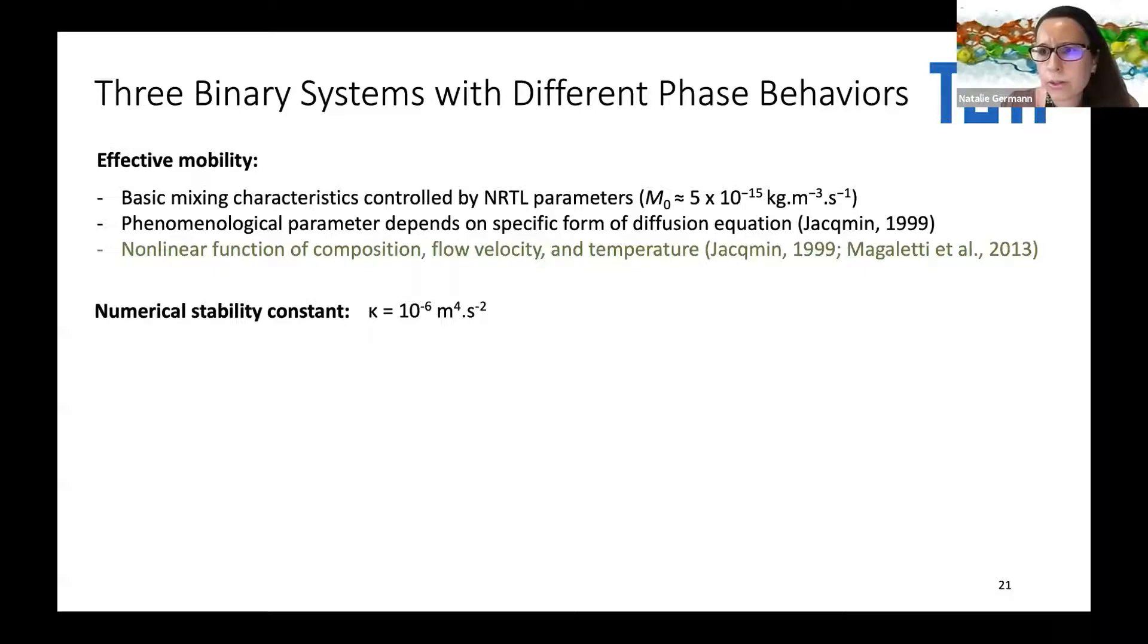It's basically a phenomenological parameter depending on the specific form of the diffusion equation. It is a non-linear function of composition, velocity, and temperature, and needs to be adjusted to experiments. This is a very important point, especially if you want to do industrial simulations. If you want to simulate a real process, these parameters have to be set accurately, reliably. For this, we need a direct comparison with experiments. Kappa is the stability constant in the mixing energy. In our formulation, it's just for numerical reasons to increase numerical stability, but does not have any other effects. Remember in the NSCH model, it also determines the interfacial thickness as well as the surface tension. But in our case, it's not.